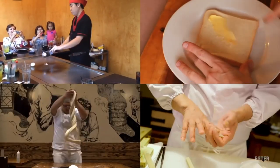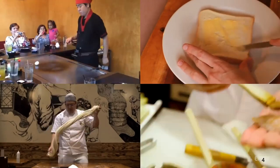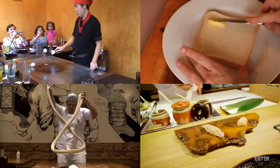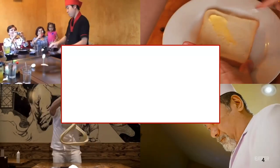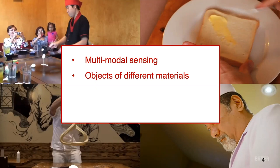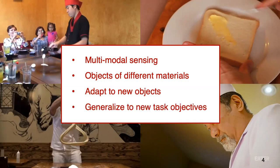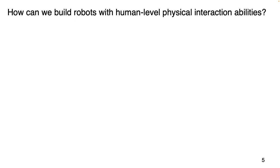The key gaps between robots and humans in interaction capability are the ability to sense the environment from multiple sensing modalities like vision, touch, and sound; the ability to handle objects of different materials and adapt to new objects never seen before; and the ability to generalize to new task objectives. So how can we build robots with human-level physical interaction capabilities?